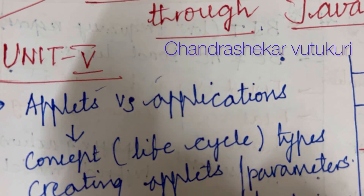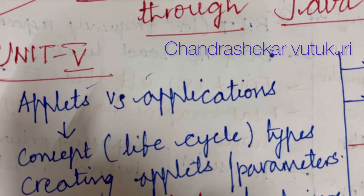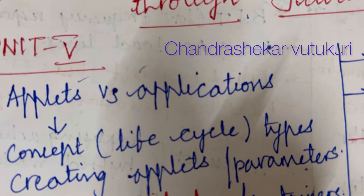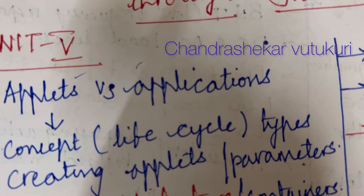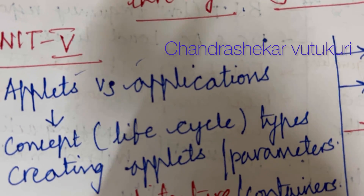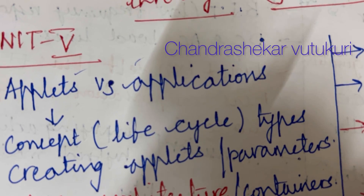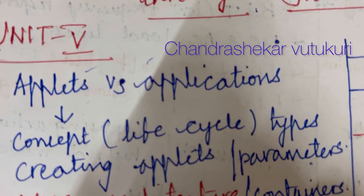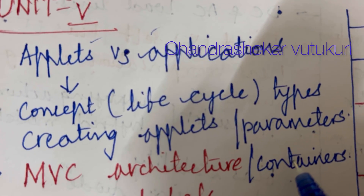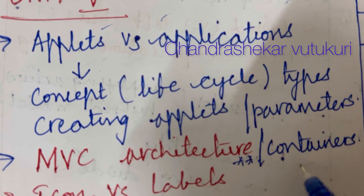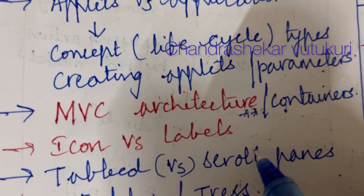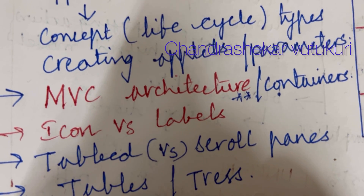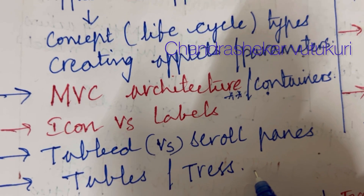The concept you are supposed to work out related to applets, and you are supposed to work out the life cycle and its types as well, which may occur in the question paper as per R22 Regulation. You'll be getting two questions — long and short. You need to be thorough with each and every parameter. Creating applets and its parameters is set to be the topmost question. MVC architecture is a definite question, and containers, icons versus labels, tabs versus scroll panes, as well as tables are also set to be topmost questions.